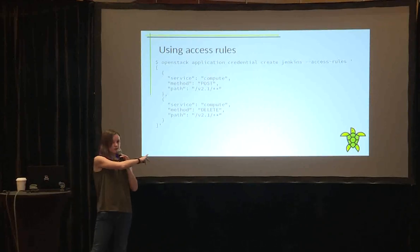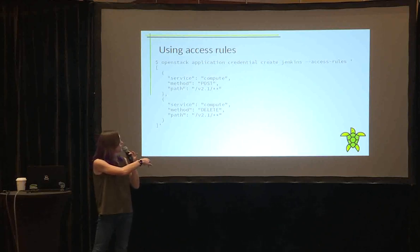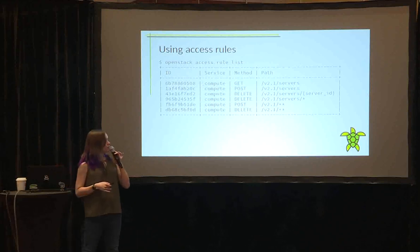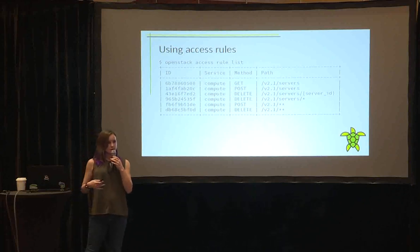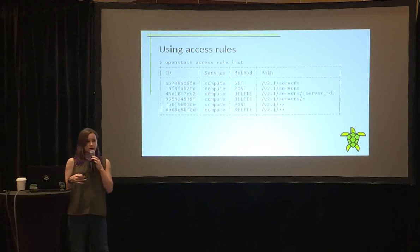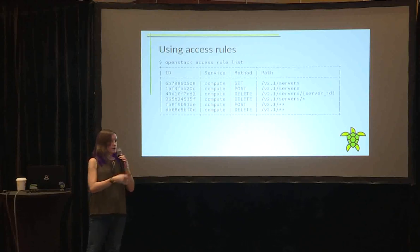We also have a recursive wildcard glob syntax, which is even more permissive. For instance, an application credential could do any POST or DELETE operation on the compute service. Something worth noting is that once an access rule is created, it becomes independent from the application credential. So you can reuse old rules by using their IDs instead of looking up the API reference every time you want to rotate your application credentials — you can use the ID to reassign old access rules.